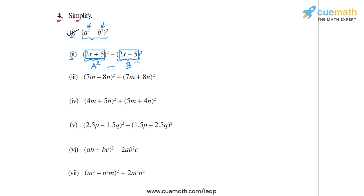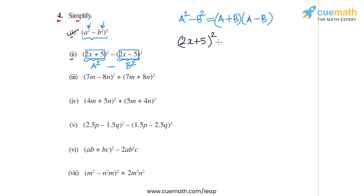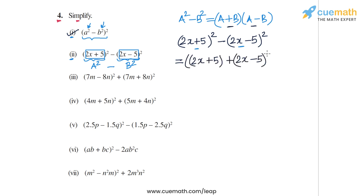Since a² - b² can be written as (a+b)(a-b), we apply this to simplify the expression. So (2x+5)² - (2x-5)² is factorized as (a+b)(a-b), where a+b is (2x+5) + (2x-5) and a-b is (2x+5) - (2x-5).